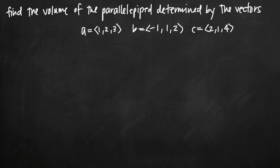Today we're going to be talking about how to find the volume of the parallelepiped, determined by the vectors. In this particular problem, we've been given three vectors a, b, and c. a is (1, 2, 3), b is (-1, 1, 2), and c is (2, 1, 4).